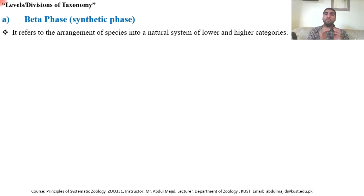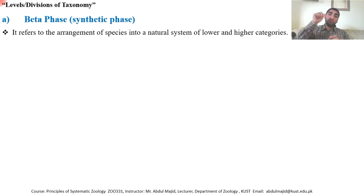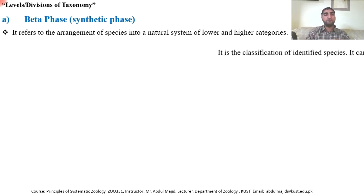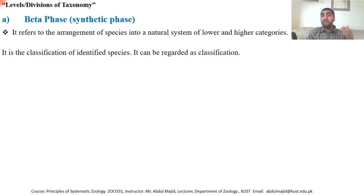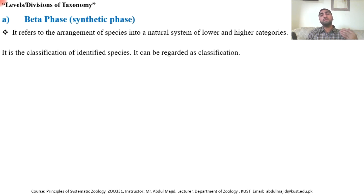For example, you have a species you don't know — you characterize, discriminate, and name it, working at micro level. But then you need to place this species into a genus, the genus into a family, that family into an order, the order into a class, and so on. When you place already identified species into higher categories, this is macro taxonomy — beta phase or synthetic phase — essentially classification.